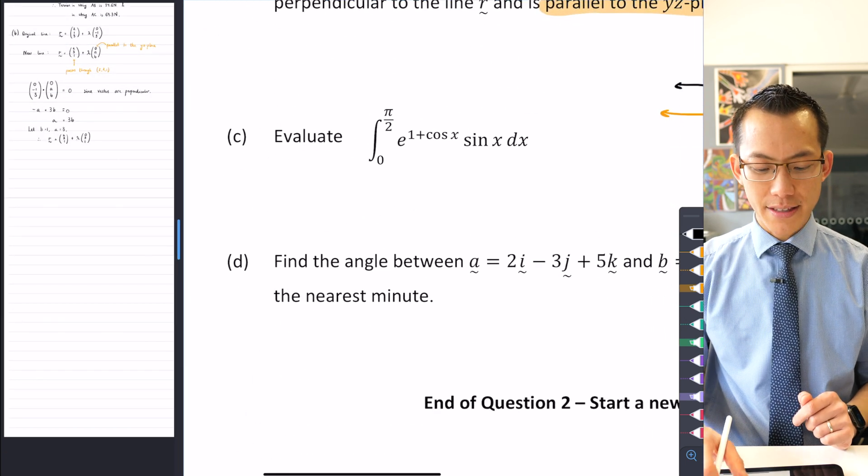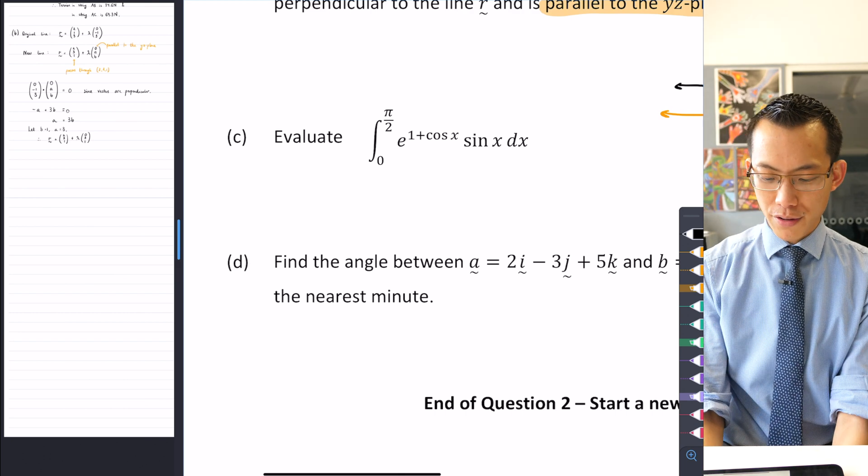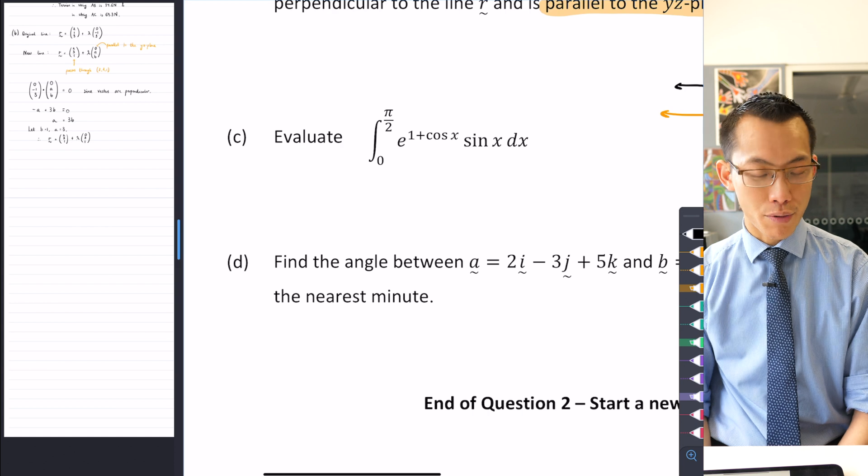All right, so let's have a look at this next question, part C. Evaluate the integral from 0 to π/2 of, and then you can see this particular integrand that's been presented to you.